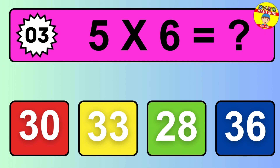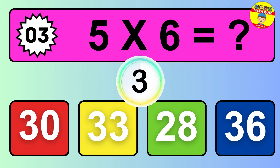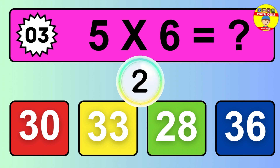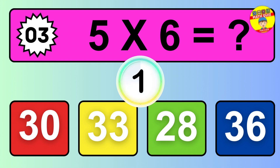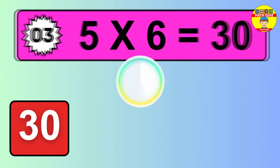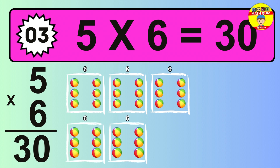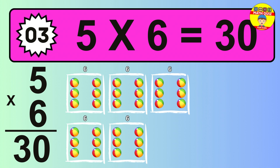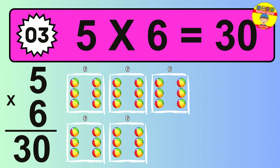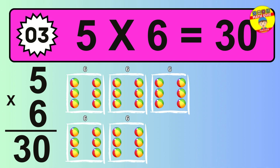Question 3. 5 times 6 equals what? The answer is 5 times 6 is 30. To calculate, we have 5 groups with 6 balls each one. So how many balls do we have? 30 balls.